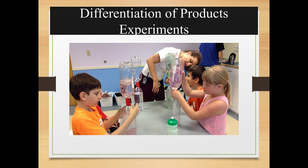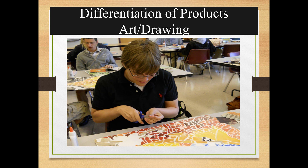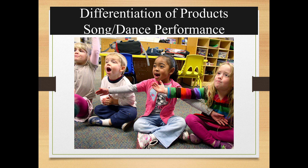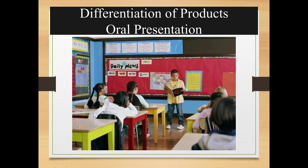Let's go over some different assignments that you might use to differentiate through products. Using experiments is a good way to differentiate because different students at different levels will need different amounts of assistance and help. Another way is through art and drawing — an art assignment or drawing doesn't require much language. Assigning students to create poster boards can be an effective way to differentiate through product. Learning songs is an effective way for a language learner to practice the language. Oral presentations can be a little difficult, so for level 3 and level 4 learners, they might be expected to present to the classroom.